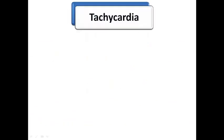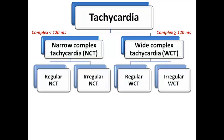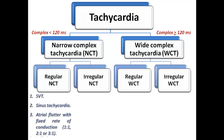We can further subdivide each into regular or irregular based on the rhythm and RR interval, giving four subtypes: regular narrow complex tachycardia, irregular narrow complex tachycardia, regular wide complex tachycardia, and irregular wide complex tachycardia.